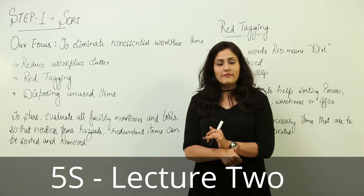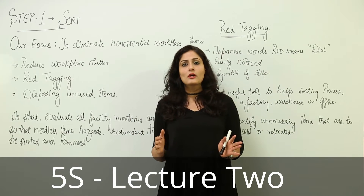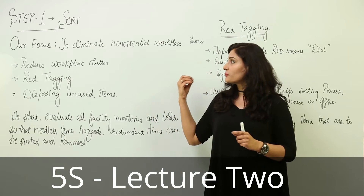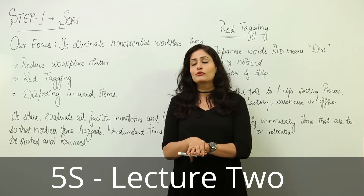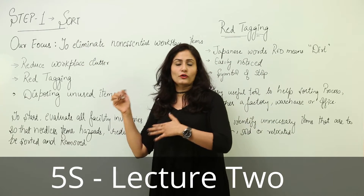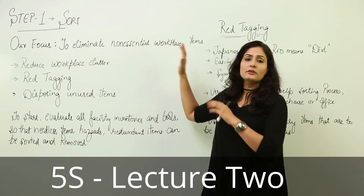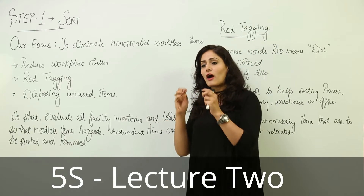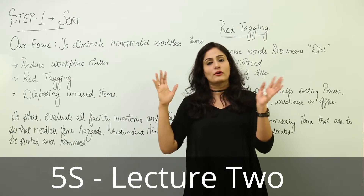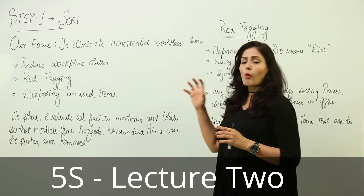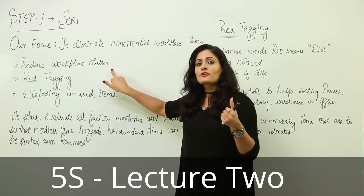Now that you understand what 5S is, its uses, and the benefits we can get from implementing this tool, let's move on. I'll explain how you can actually implement this tool. There are five steps or five phases. Starting with step one: Sort, or Seiri in Japanese. In this phase, our focus is to eliminate non-essential workplace items — things that are clutter, not used for long periods, or need to be fixed. We have to find out all these things in the workflow or factory.